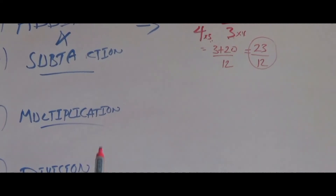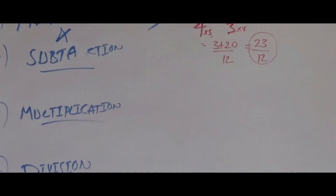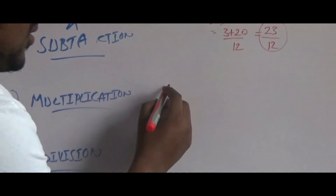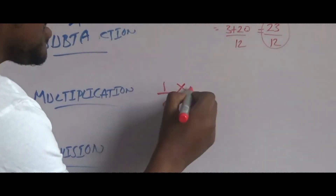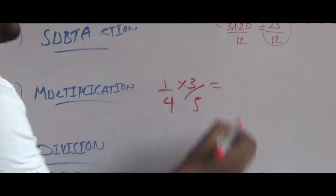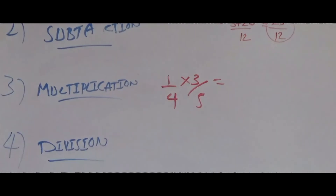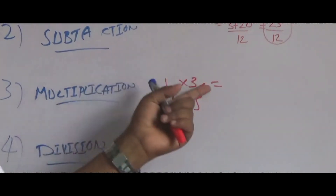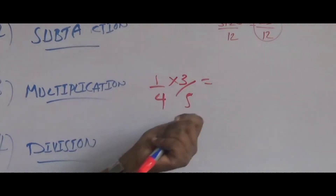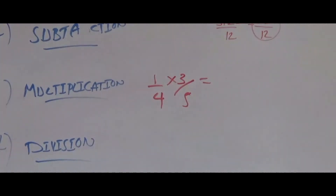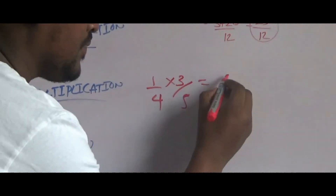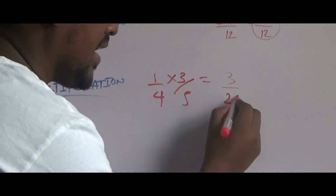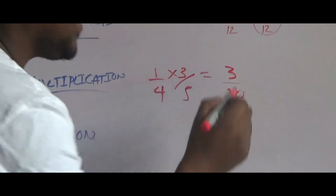Now we have multiplication. For example, 1 over 4 times 3 over 5. So 1 times 3 is equal to 3, and 4 times 5 is equal to 20. So 3 over 20 is the answer.